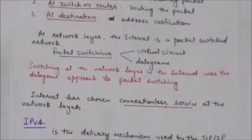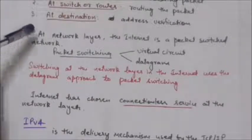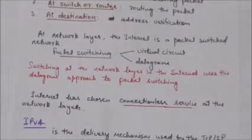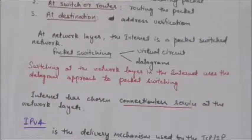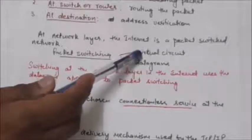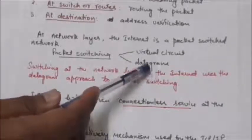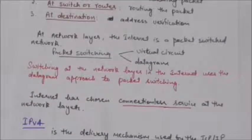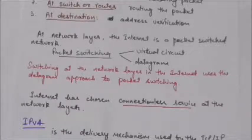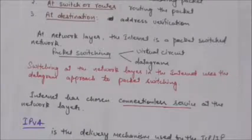At the network layer, the internet is a packet-switched network. Packet switching uses either the virtual circuit approach or the datagram approach. The internet has chosen the datagram approach to switching in the network layer.